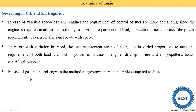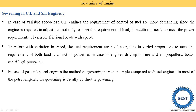In the case of a gas or petrol engine, the method of governing is simpler compared to the diesel engine. In most petrol engines, governing is usually by throttle governor, and the throttle governor is connected with the accelerator. In our bike, which is a petrol engine, we just reduce or increase the accelerator and the bike speed changes - that is known as throttle governing.